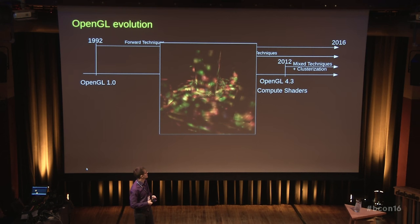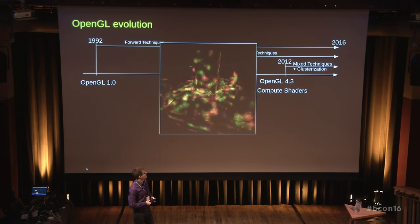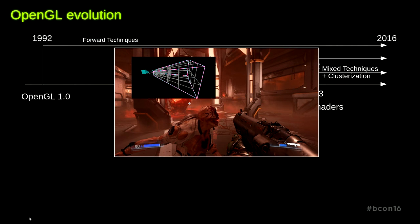Deferred techniques — for example, deferred lighting — have some advantages. For example, you are not limited in the number of lights, so you can use a really large amount of lights. The second point represents a more modern approach: compute shaders, used for example in the Doom game released in 2016. Here, clusterization is used, and actually forward rendering is used. The limitation on the number of lights is resolved with clusterization of camera frustums.